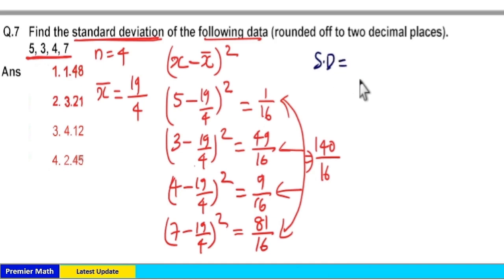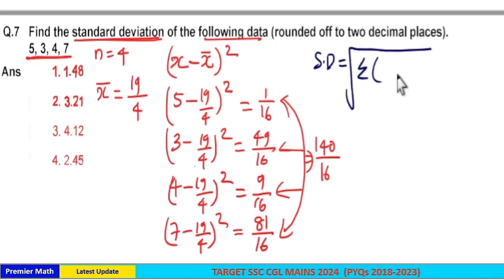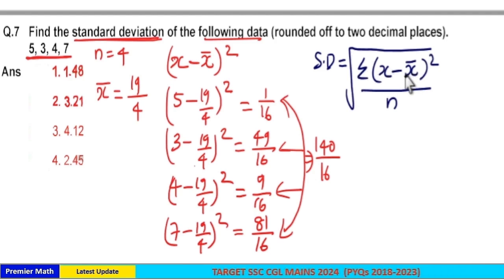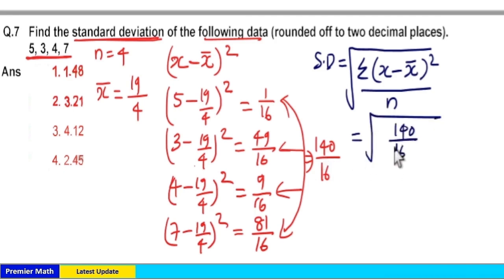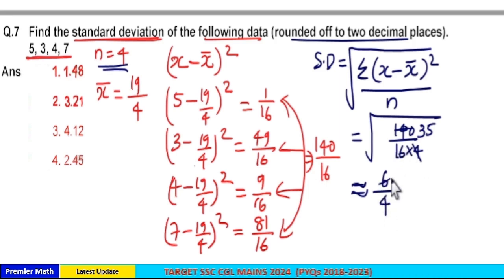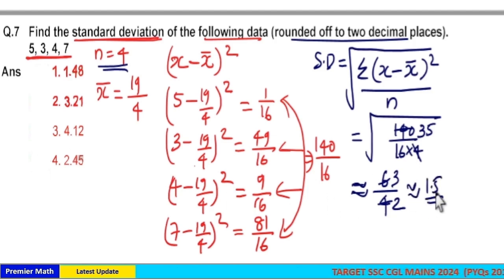The standard deviation formula is the square root of the sum of the squared differences between each sample and the mean, divided by the total number of samples. This equals the square root of 140 by 16 divided by n equals 4, which simplifies to the square root of 35 by 4. Approximating root 35 as root 36 equals 6, and root 16 is 4, giving 6 by 4 which is 1.5. So the answer is approximately 1.48, which is the standard deviation of 5, 3, 4, 7.